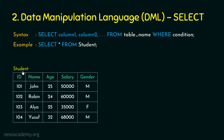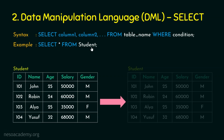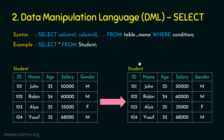Suppose we have a student table containing 5 attributes or columns: id, name, age, salary and gender. When we execute SELECT * FROM student, all values are listed and we get a view containing all values of the table. Because we used star and we have not specified any condition, all rows and all columns are displayed.